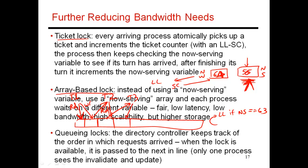This leads to less coherence traffic because every thread is assigned to its own location. When somebody modifies that location, only two threads are involved in the coherence transaction: the thread that did the write and the thread doing the read. Everybody else waiting in the queue is waiting on a different variable and will not be involved in the coherence transactions created when T2 is doing a handoff to T3.